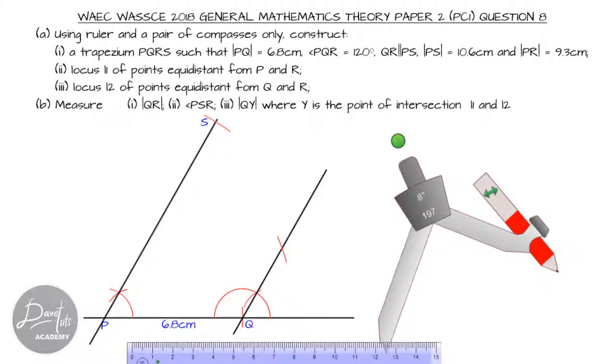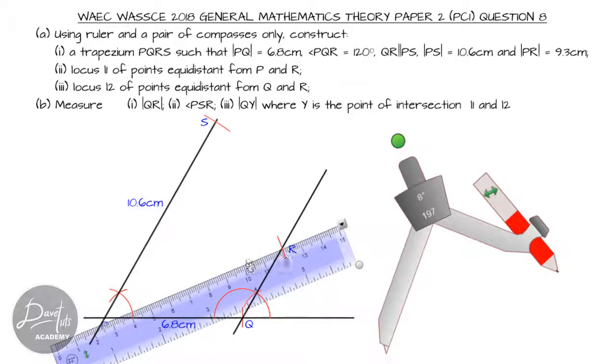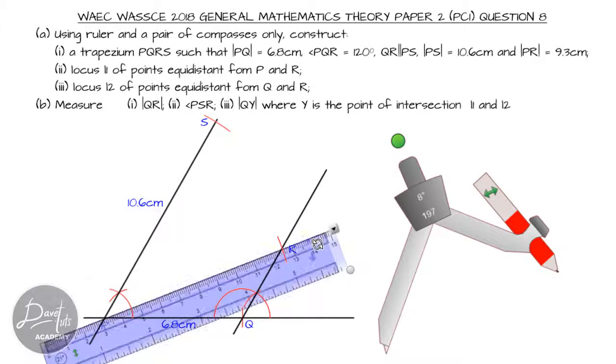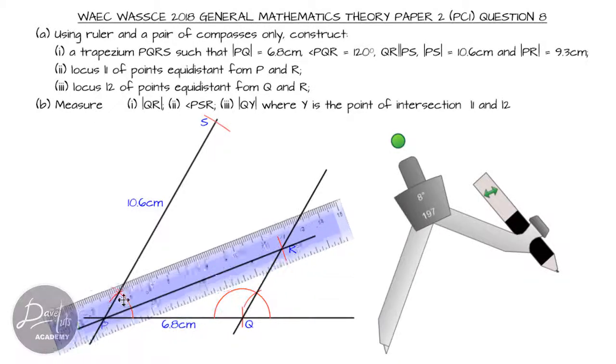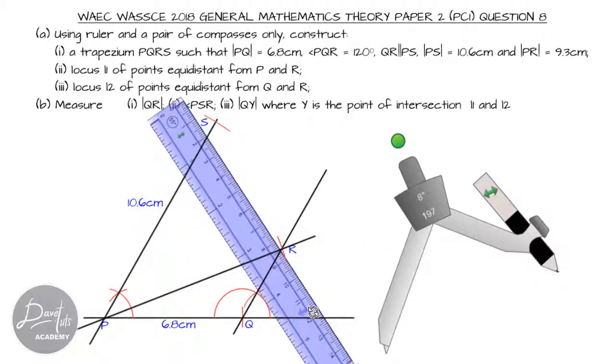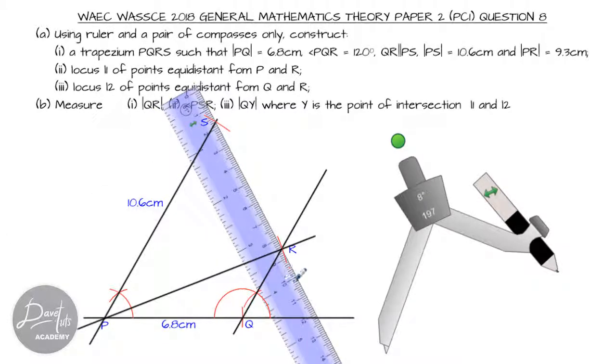With these, I've gotten the four vertices of the trapezium and I'm labeling them appropriately. I can finish up the diagram by joining the lines and putting my labels. The straight line from P to R, which is 9.3 centimeters, is being drawn as shown. Then I'll join S and R to constitute a trapezium.